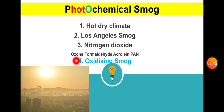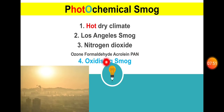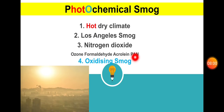The most important chemicals in photochemical smog are NO2, ozone, formaldehyde, acrolein, and PAN. PAN stands for peroxyacetyl nitrate.